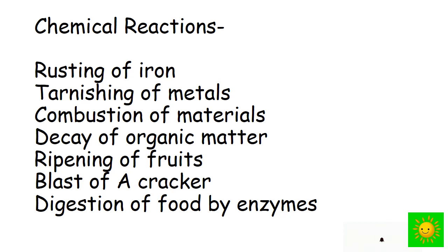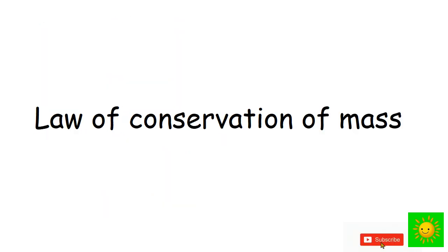Let's see some examples of chemical reactions taking place in everyday life: rusting of iron, tarnishing of metals, combustion of materials, decay of organic matter, ripening of fruits, blast of a cracker, and digestion of food by enzymes.